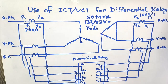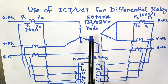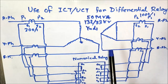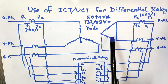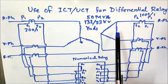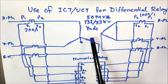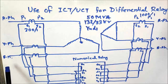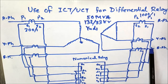A 50 MVA transformer has been shown operating at 132/33 kV. The HV side is 132 kV, Y-connected with neutral grounded. The LV side is 33 kV. The vector group is YD1, meaning the LV winding phase is lagging the HV winding phase. It is R-phase, Y-phase, and B-phase for the HV side, and red, yellow, and blue phase for the LV side.